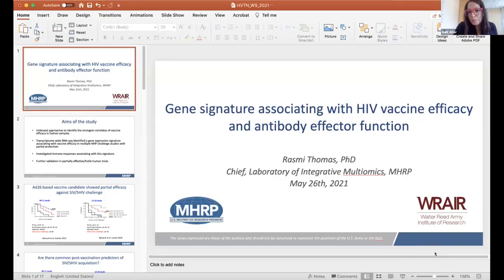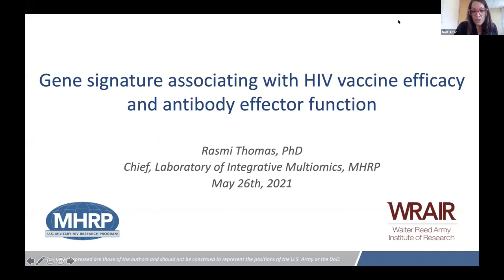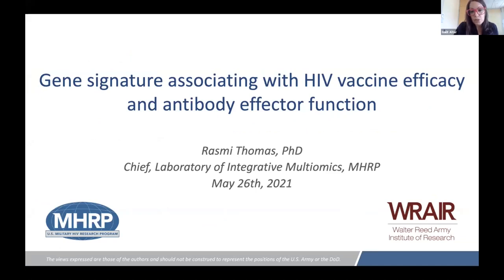For our last speaker, we're going to turn now to systems biology and genomic sciences, which is critical for understanding the diversity of the populations we're looking at, as well as understanding the overall omic-level changes that might point to unexpected correlates of immunity from infection. It's my honor to introduce Rashmi Thomas, chief of the Laboratory of Integrative Multiomics at the MHRP.